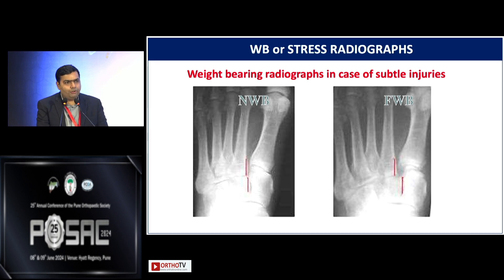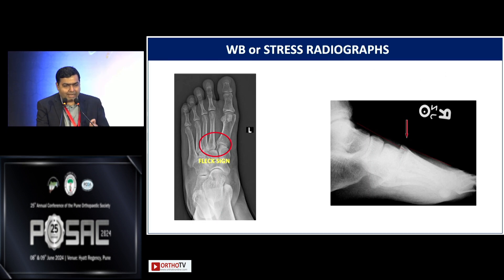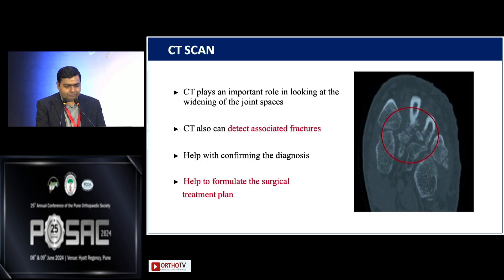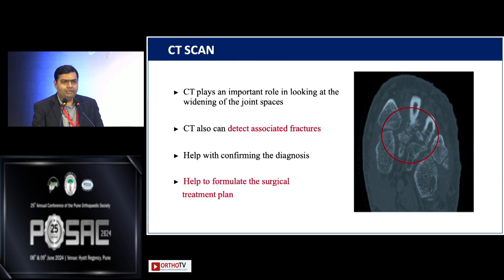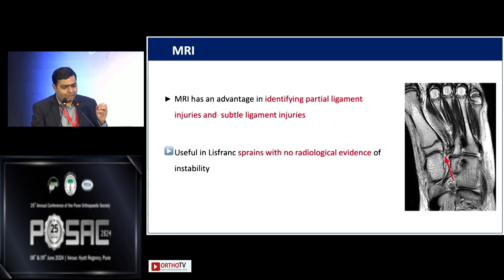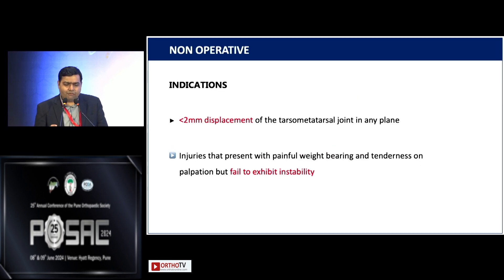A bit of diastasis between M2 and C1 indicates a Lisfranc injury. You can also get small flake signs — an osseous fragment representing a Lisfranc ligament avulsion. Lateral weight-bearing X-rays reveal sagittal plane instability. CT scan is also very important to detect associated fractures and help formulate a surgical plan. MRI is useful in cases where there is no radiological evidence of instability, helping identify partial tears or subtle injuries.